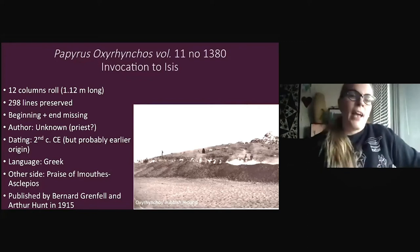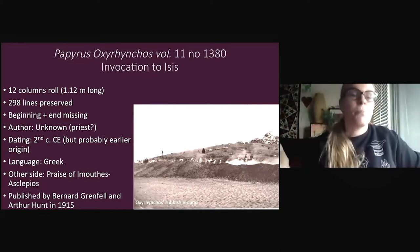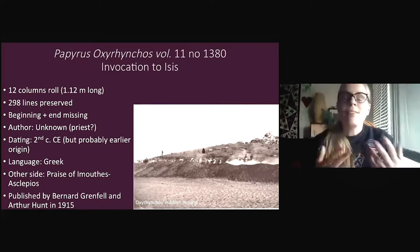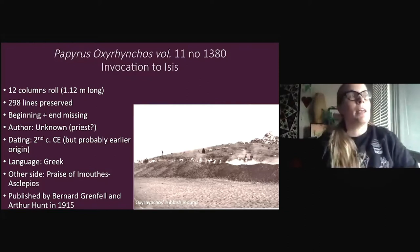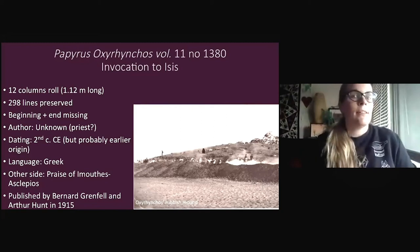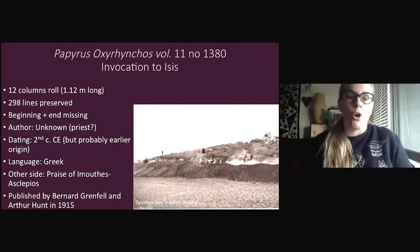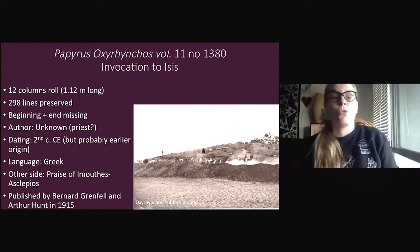The papyrus was found in the rubbish mound of the city — basically thrown away by someone. Because of the handwriting, we know it was written around the second century CE, at a time when Egypt was part of the Roman Empire. It is written in Greek, which at the time was the language of the ruling elite and the official administrative language. However, the vast majority of the inhabitants of Egypt were Egyptian speakers, and Egyptian remained the language of the majority in Egypt all the way until after the Arab conquest. But this text was written in Greek, which also tells us that Isis was of great interest for Greek speakers in the province.